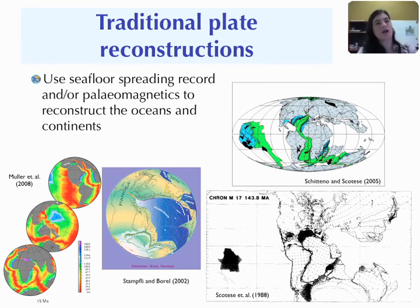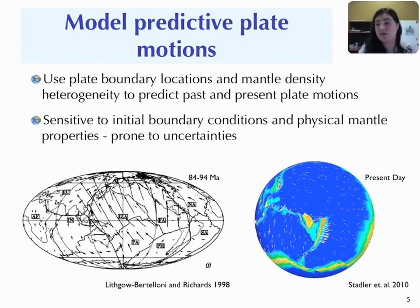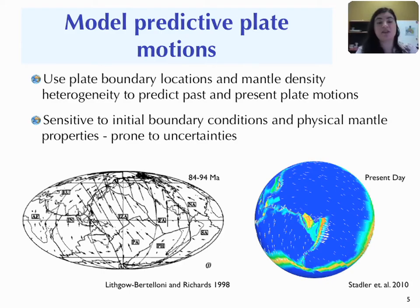The third approach, just for completeness, is model predictive plate motions. Some groups have tried to use ideas of plate boundary locations and mantle density heterogeneity to predict past and present plate motions. This was done quite successfully by Lithgow-Bertoloni and Richards in 1998, and more recently Stadler et al. published a paper trying to predict present day plate motions using coupled geodynamic and plate models. Unfortunately, these models are sensitive to boundary conditions — very sensitive to physical mantle properties, which are all subject to uncertainty. So they do a good job in some cases but there are problems at other time periods.